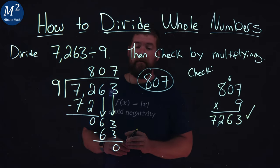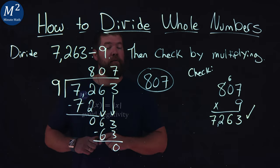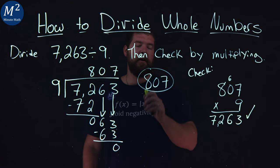And so again, our answer here for 7,263 divided by 9 is 807.